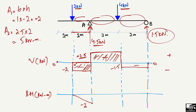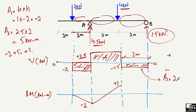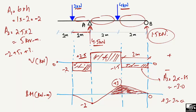Adding these: minus 2 plus 5 gives plus 3 kilonewton-meters at that point. The last rectangle has width 2 meters and height minus 1.5 kN, so A3 equals minus 3 kilonewton-meters. Adding plus 3 and minus 3 gives zero, which closes the bending moment diagram. This is the complete bending moment diagram for the overhanging beam with concentrated loads.